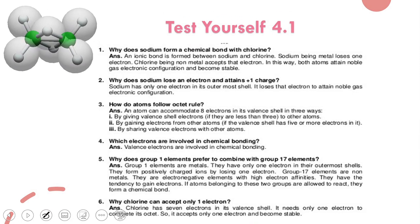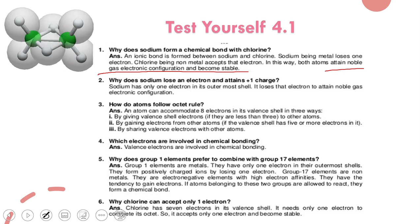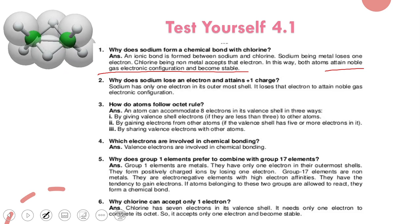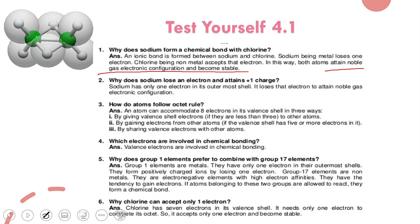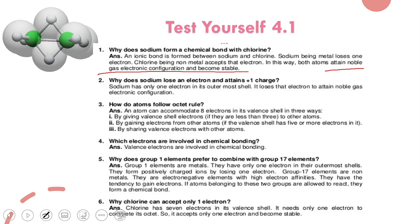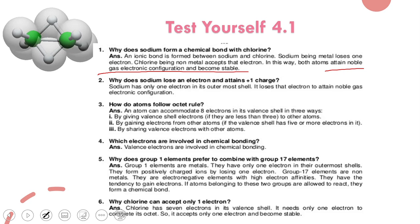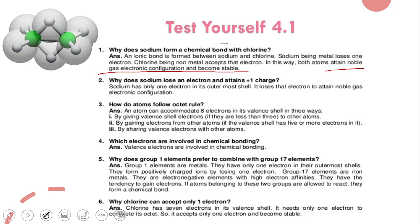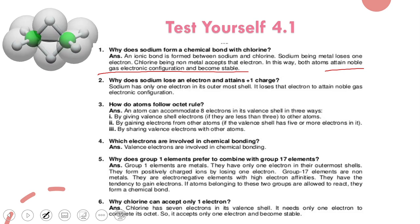Both achieve noble gas electronic configuration by losing and gaining electrons respectively, and they become stable. Why does sodium lose an electron and attain a plus one charge? Because it has only one electron in its last shell — to follow the octet rule, it loses just that one electron and gets a positive one charge. How do atoms follow the octet rule? There are three ways: by giving valence shell electrons, by gaining valence shell electrons, and by sharing valence electrons. Why do group one elements prefer to combine with group 17 elements? Group one elements are metals and group 15 to 17 are non-metals — metals and non-metals combine to form ionic bonds.